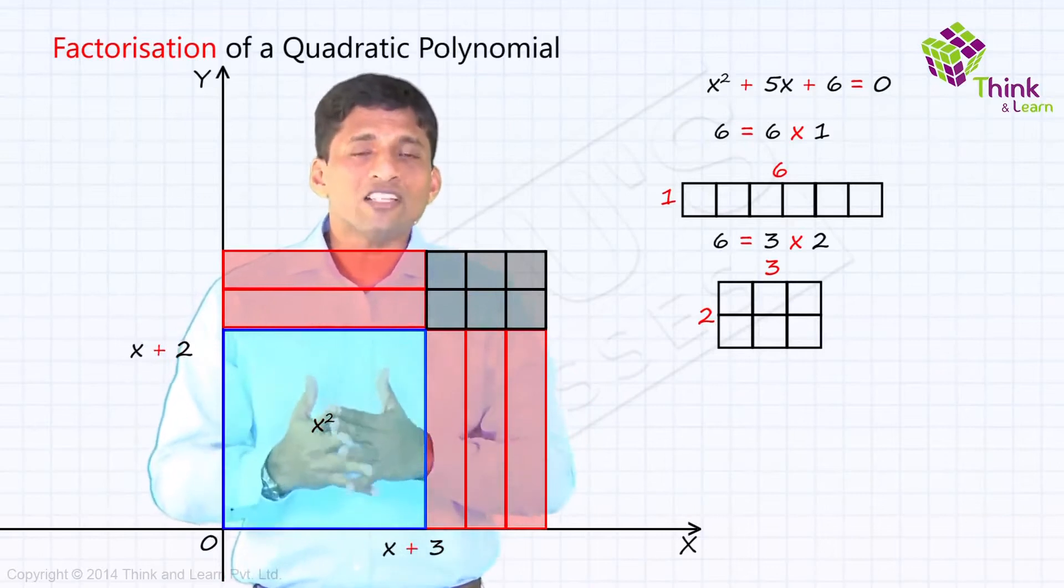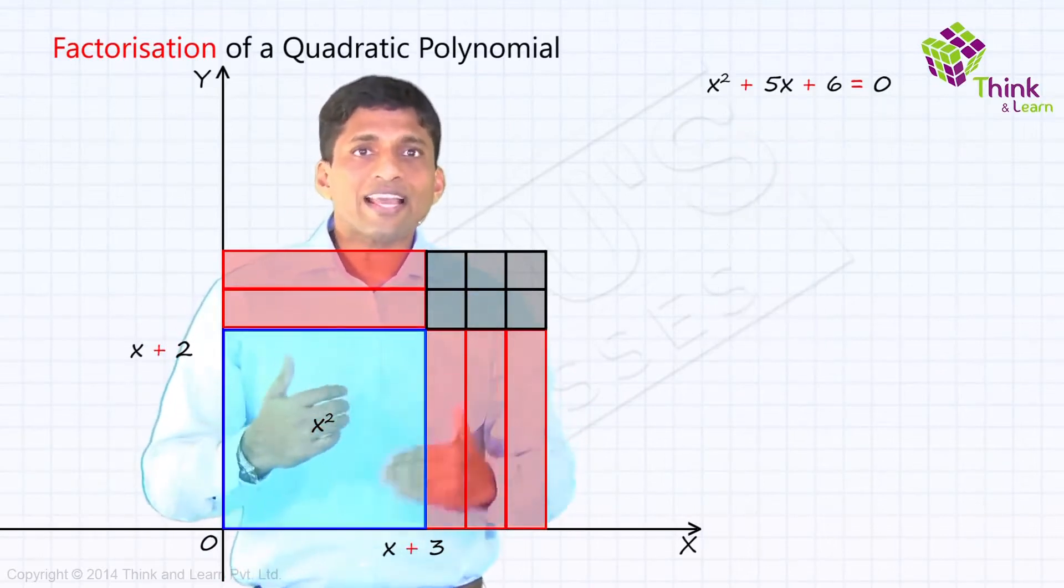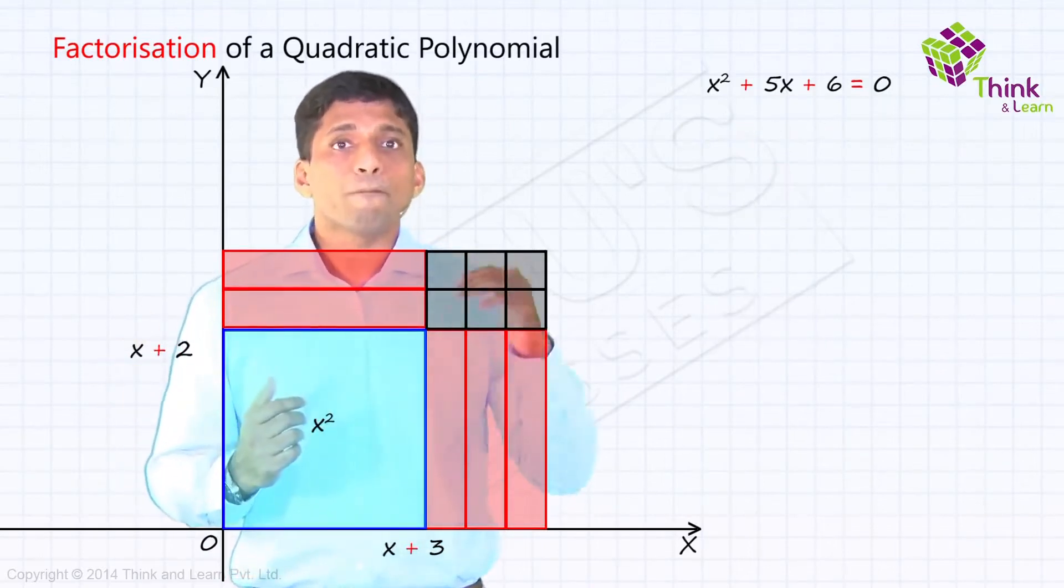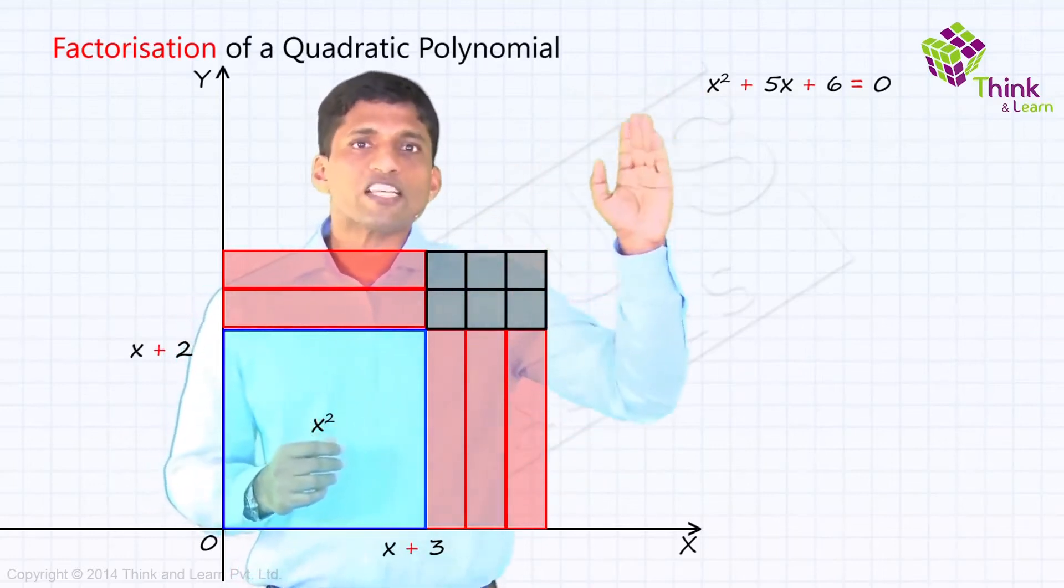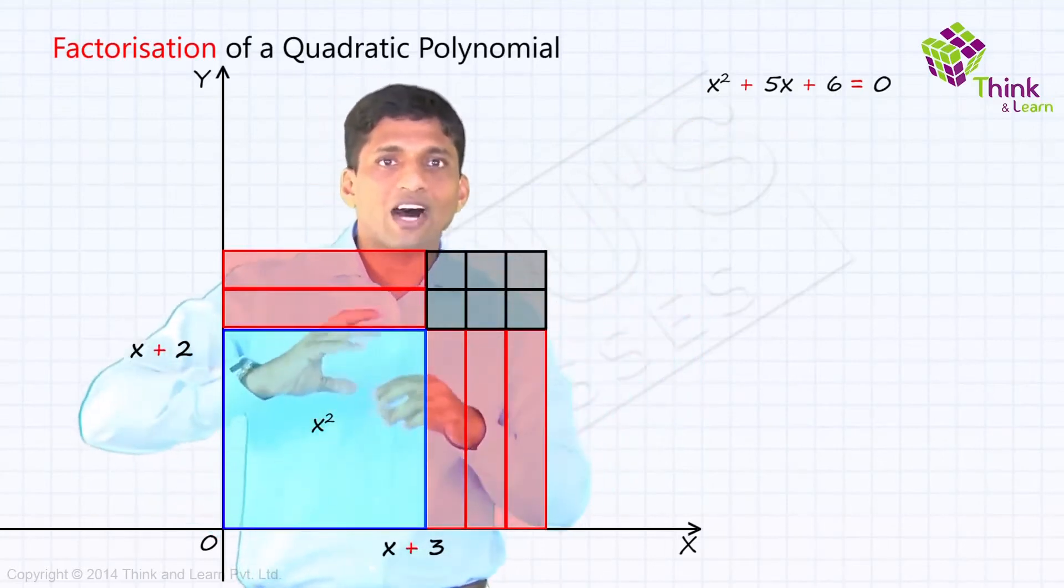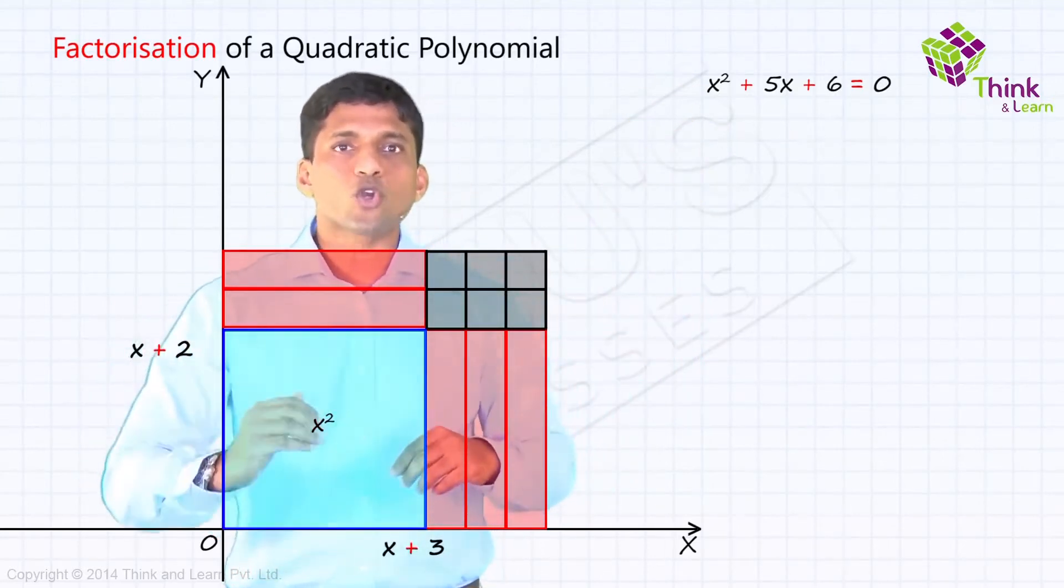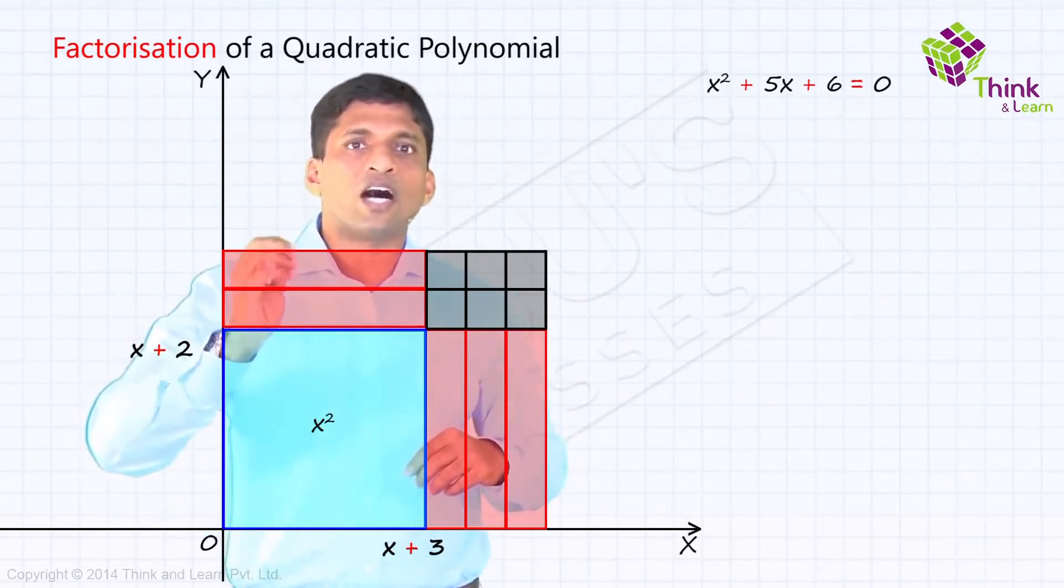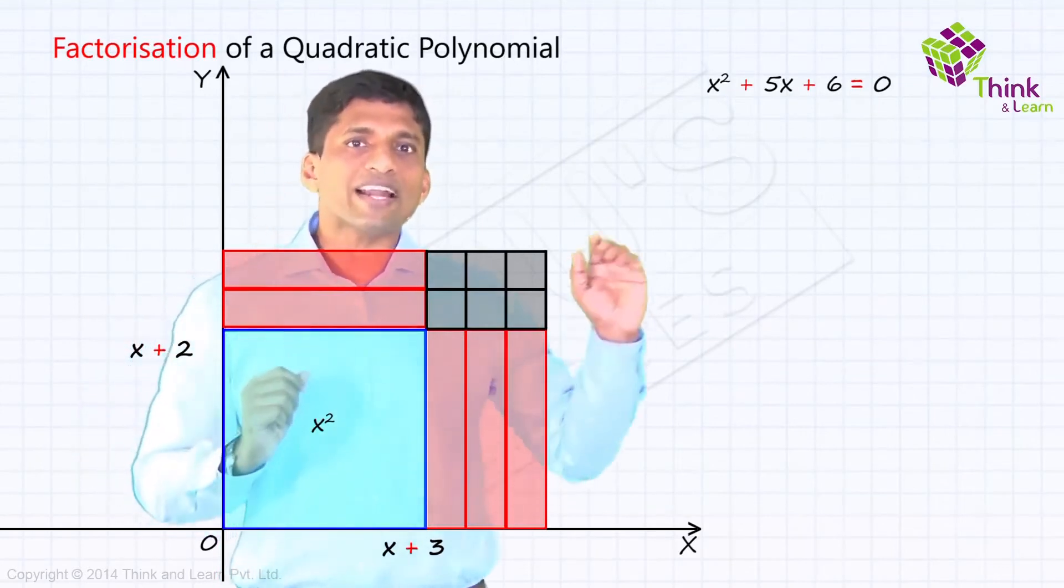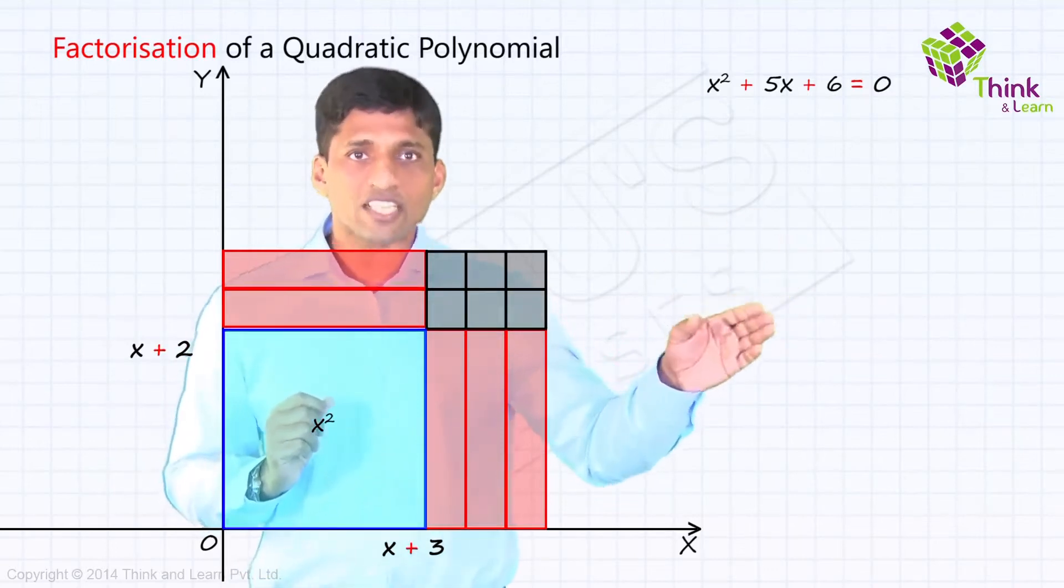So area of this rectangle is nothing but, if I take length into breadth, x square plus 5x plus 6, which is our original expression. So x square plus 5x plus 6. Initially, we had 3 separate diagrams, one square with area x square, rectangle with area 5x, another rectangle outside which I kept outside with area 6.